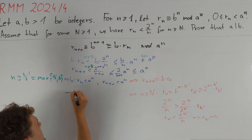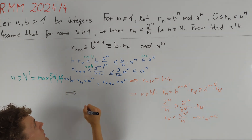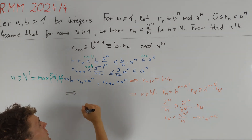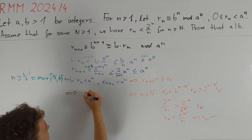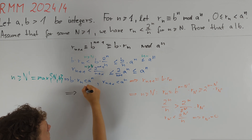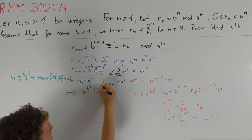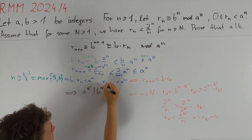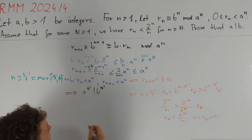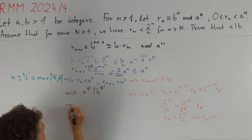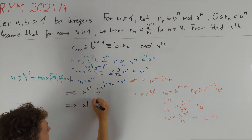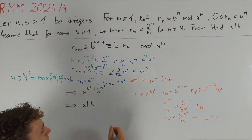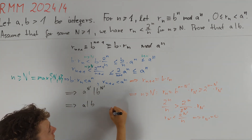So the remainder of b^{n'} upon division by a^{n'} is 0. In other words, a^{n'} divides b^{n'}, which clearly also implies a divides b. And therefore, we are done.